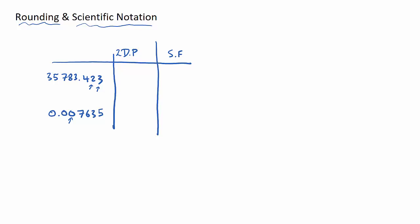If it's between 0 and 4, the previous number stays the same, so 35,783.423 rounded to two decimal places is 35,783.42. For the smaller number, 0.007635, we cut off after the second decimal place. However, the zero in the second decimal place will round up due to the 7 being 5 or greater, so that answer will be 0.01. That's two examples of rounding to decimal places.